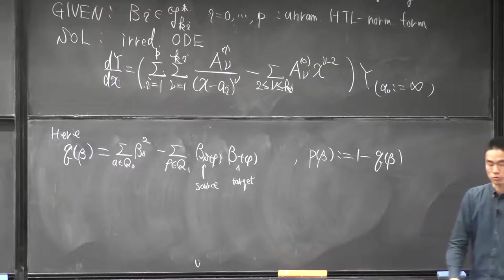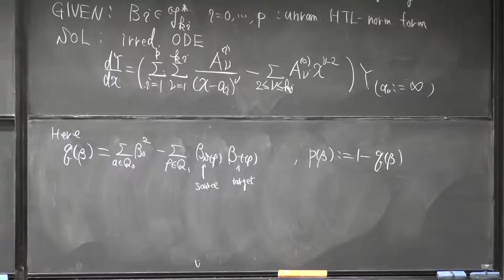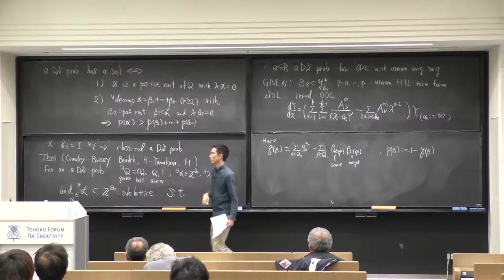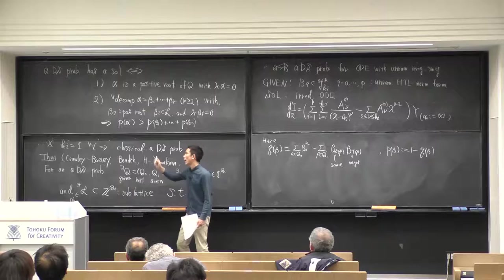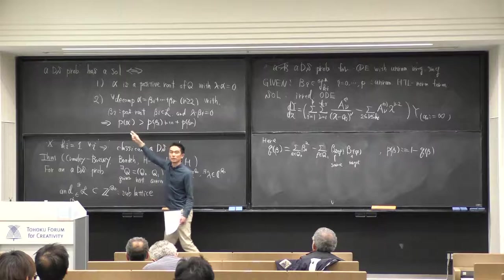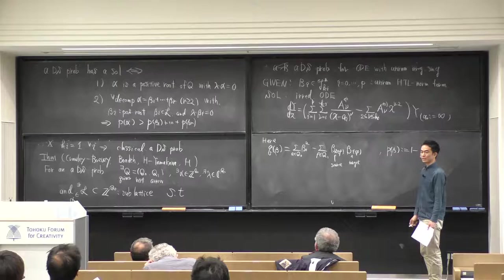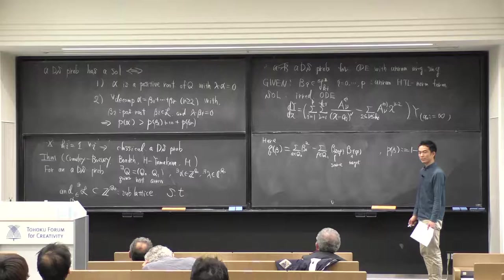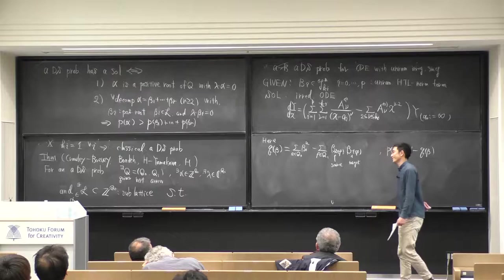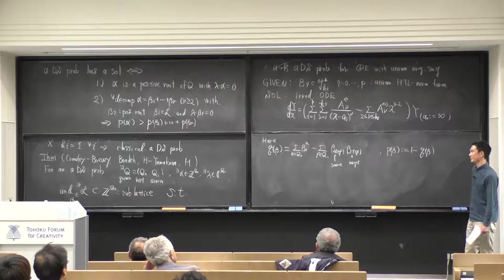Roughly speaking, P counts the dimension of the representation space with dimension vector alpha. If you decompose alpha, the representation space with alpha should be at its biggest. This gives a necessary and sufficient condition. Of course, there are infinitely many roots in the quiver, and one can check that the fundamental set of imaginary roots is also an infinite set.